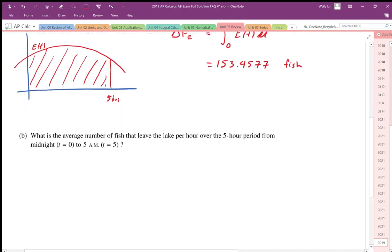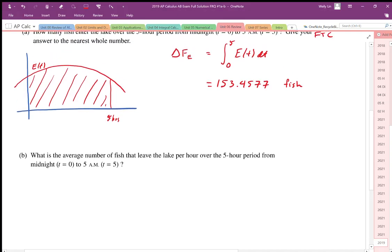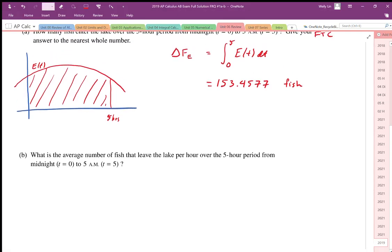For part B, it asks what is the average number of fish that leave the lake over that five-hour period. The average number of fish to leave the lake is modeled by an average value function, so we're calculating the average value.